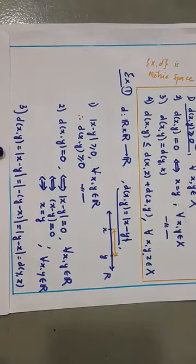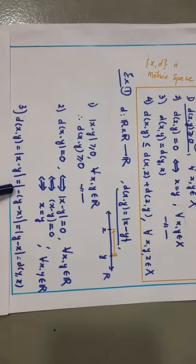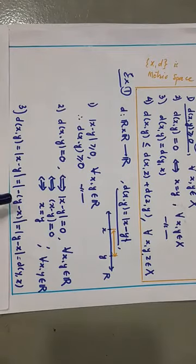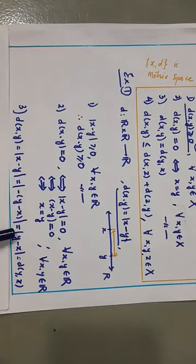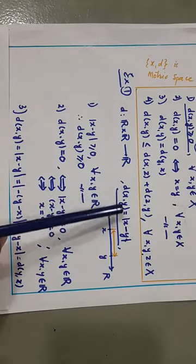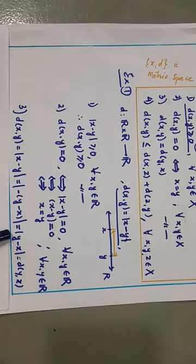Third property, which is symmetry: D(x,y) by definition is |x − y|. If we take the minus sign out, it becomes |−(y − x)|. The absolute value of a negative number is the same as the absolute value of the number, so it becomes |y − x|. By our definition, |y − x| = D(y,x). Therefore D(x,y) = D(y,x).